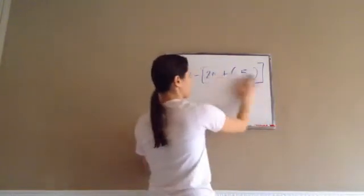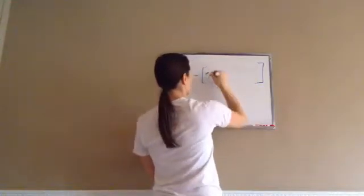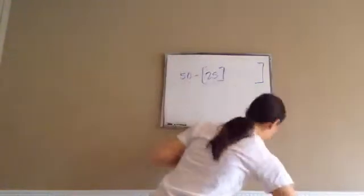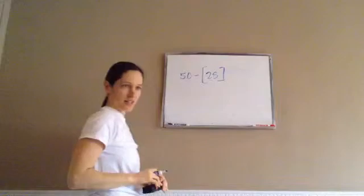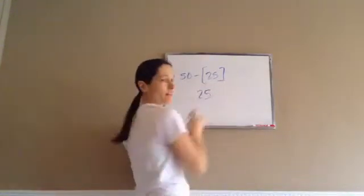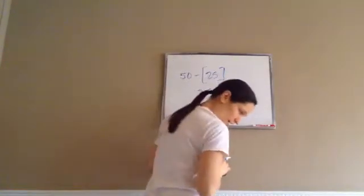20 plus 5. 20 plus 5 is? 25. 25. I'm going to put my bracket closer. Now, what? 50 minus 25. 25. 25. Final answer. Got it?